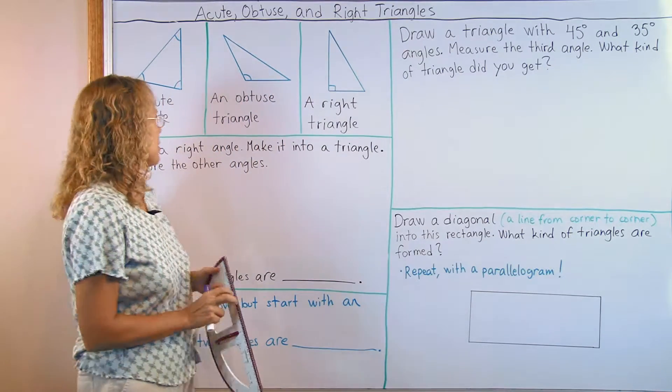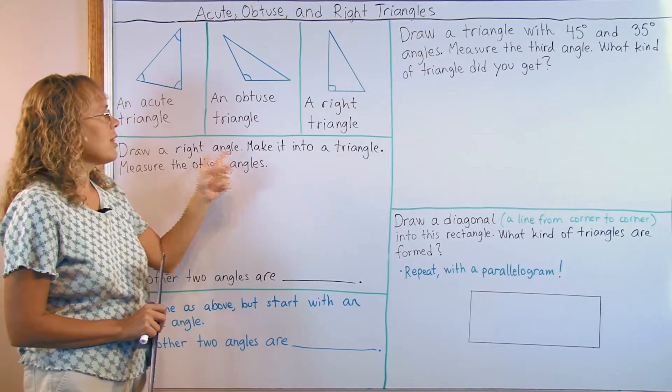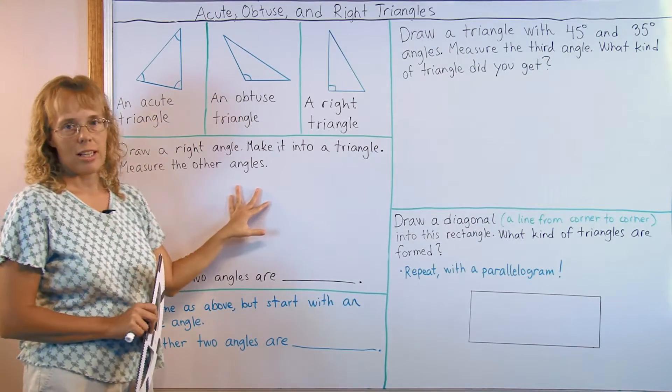So let's get started. First draw a right angle, not a triangle. And then make it into a triangle and then measure the other angles.